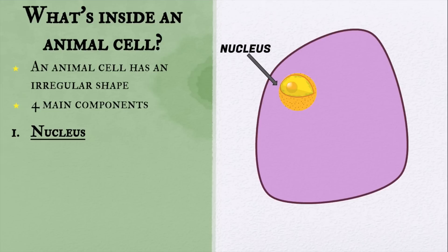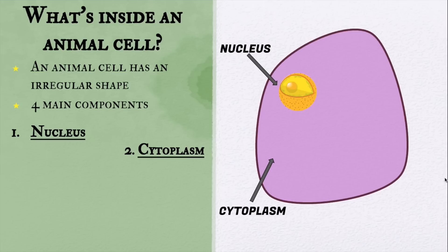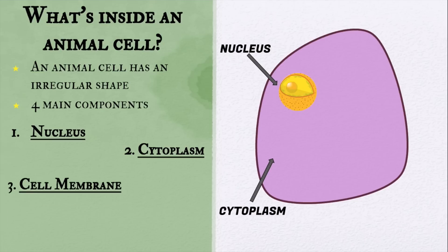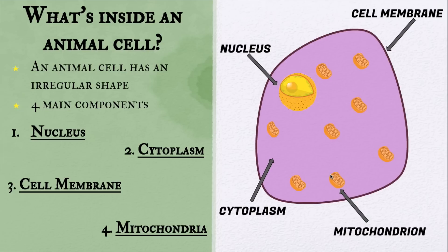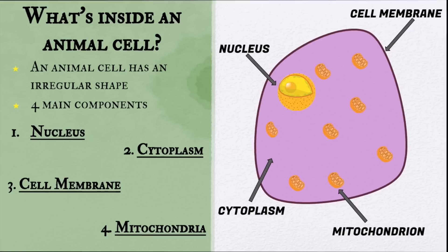The second main component is the cytoplasm, which is the substance inside the cell right here. The third main component is the cell membrane, which is the outer layer of the cell. The fourth is the mitochondria — note that the singular form of mitochondria is mitochondrion.